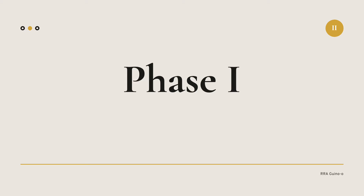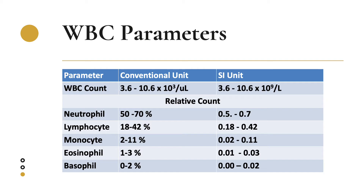In phase 1, we mainly examine three parameters. Let's first examine our different WBC parameters. The various parameters and reference values are shown in conventional units and SI units. For your WBC count, the reference values are 3.6 to 10.6 times 10 to the third cells per microliter, while in SI units, 3.6 to 10.6 times 10 to the ninth cells per liter. For the relative counts in conventional units: neutrophils 50 to 70%, lymphocytes 18 to 42%, monocytes 2 to 11%, eosinophils 1 to 3%, and basophils 0 to 2%.